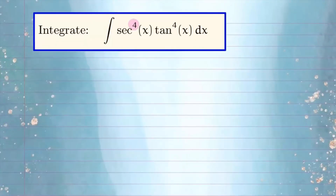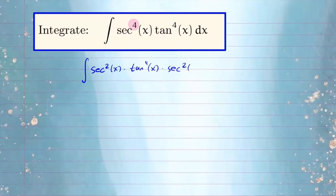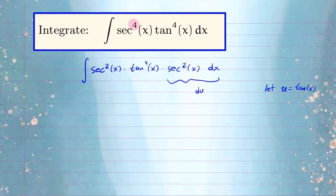We see even powers — specifically secant has an even power. So we're going to save a factor of secant squared. Rewriting: we have secant squared of x times tangent — we can keep that as it is — and secant squared of x. I pull out a factor of secant squared from secant to the fourth of x and reserve it for du. That means everything else will be written in terms of tangent, because if u equals tangent of x, then du equals secant squared of x dx.